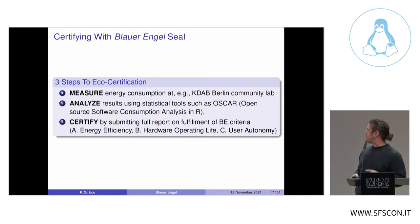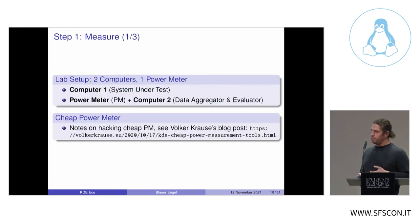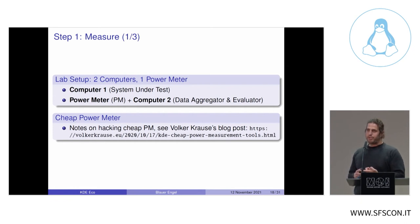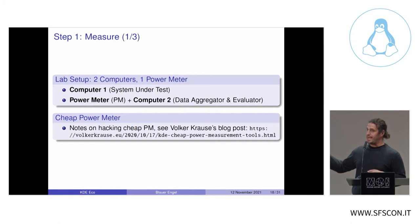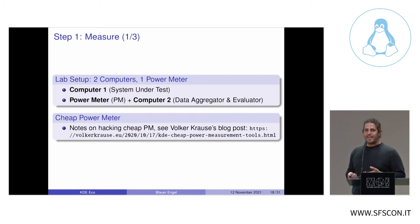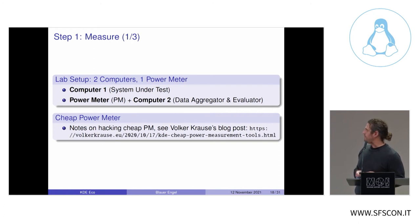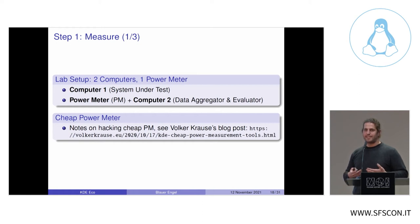Then you can certify by submitting a full report covering the ABCs of the Blauer Engel criteria. For a lab, you need at least two computers and one power meter. The primary computer is the system under test — it runs the chosen operating system with the application installed, connected to a power meter and a data aggregator. High-powered power meters are expensive, but a KDE community mentor, Volker Krause, has hacked a cheap power meter costing about 10 euros compared to 300+ for a high-powered one. The sampling rate is lower — about 5 samples per second versus up to 1000 — but for 10 euros you can already get a good sense of your software's energy consumption.